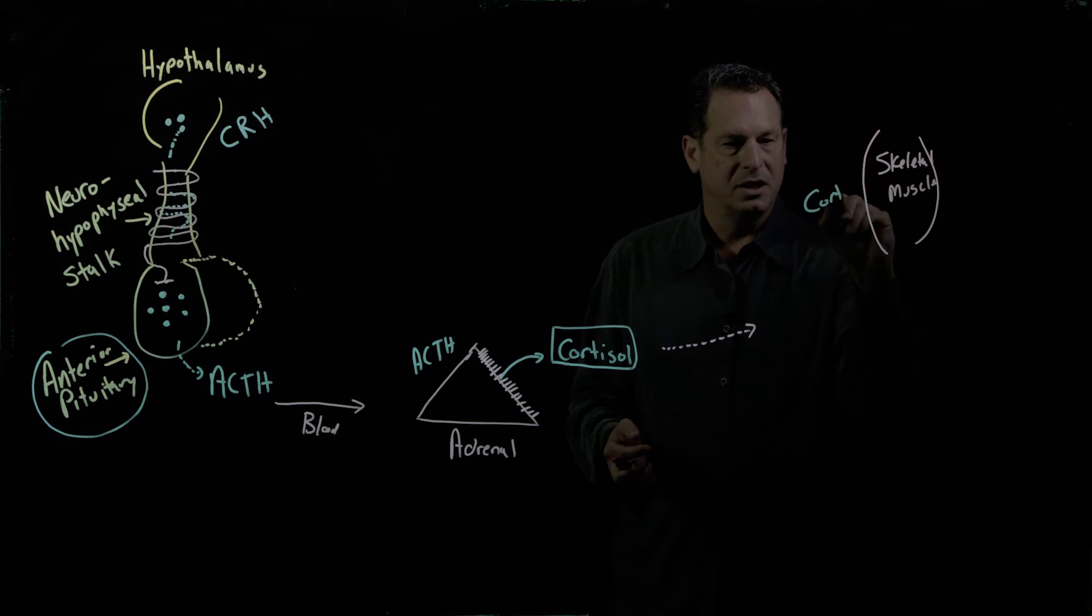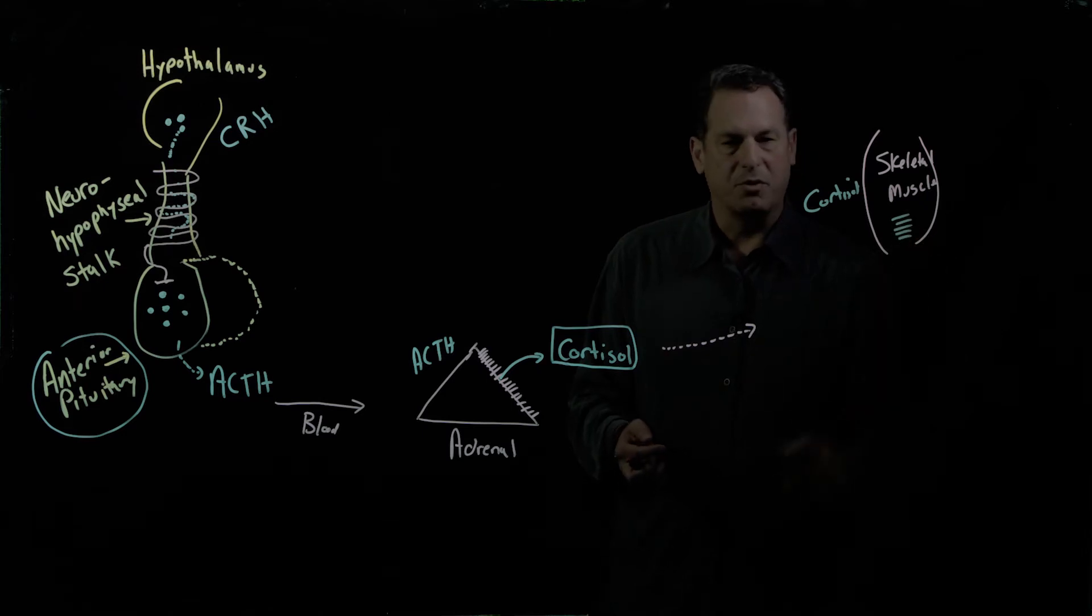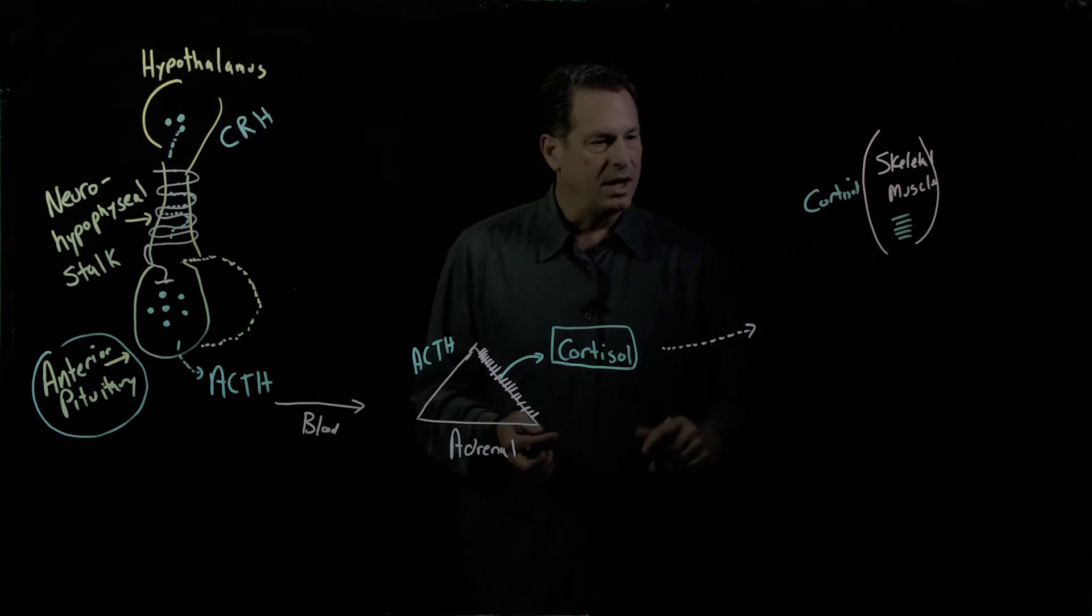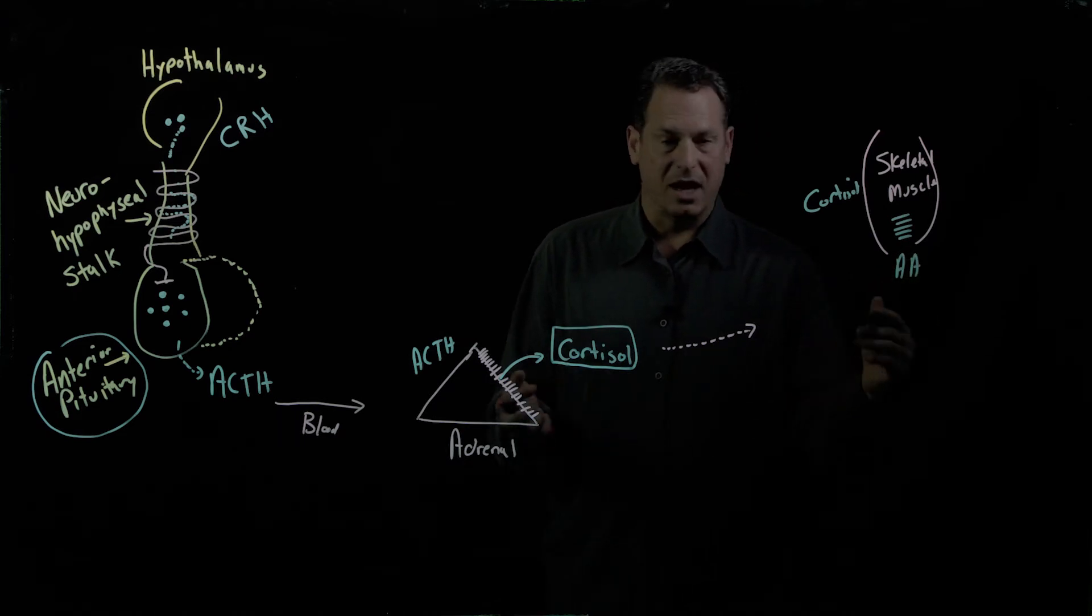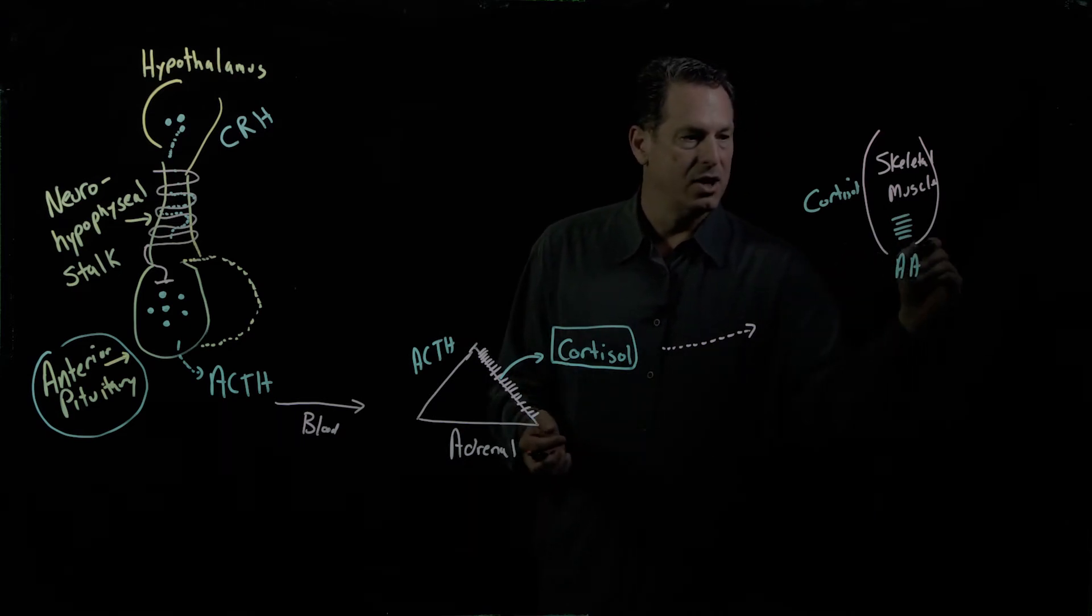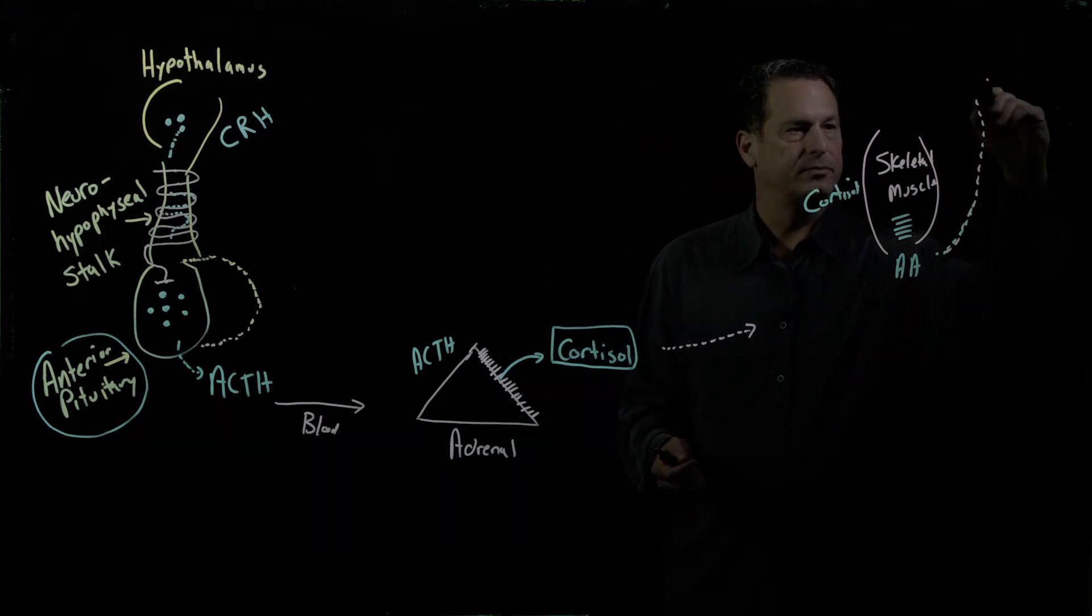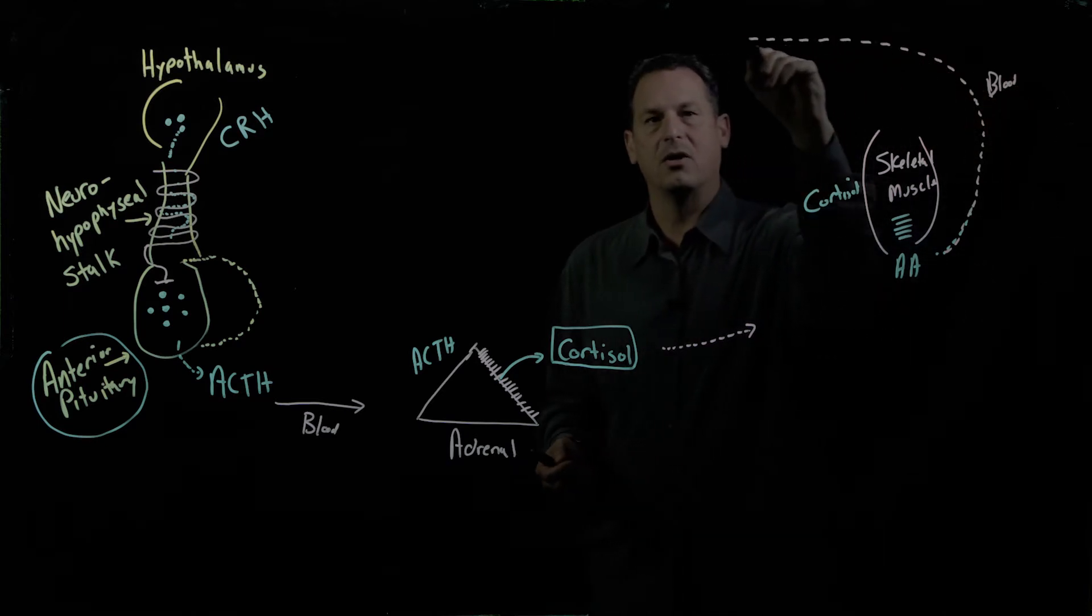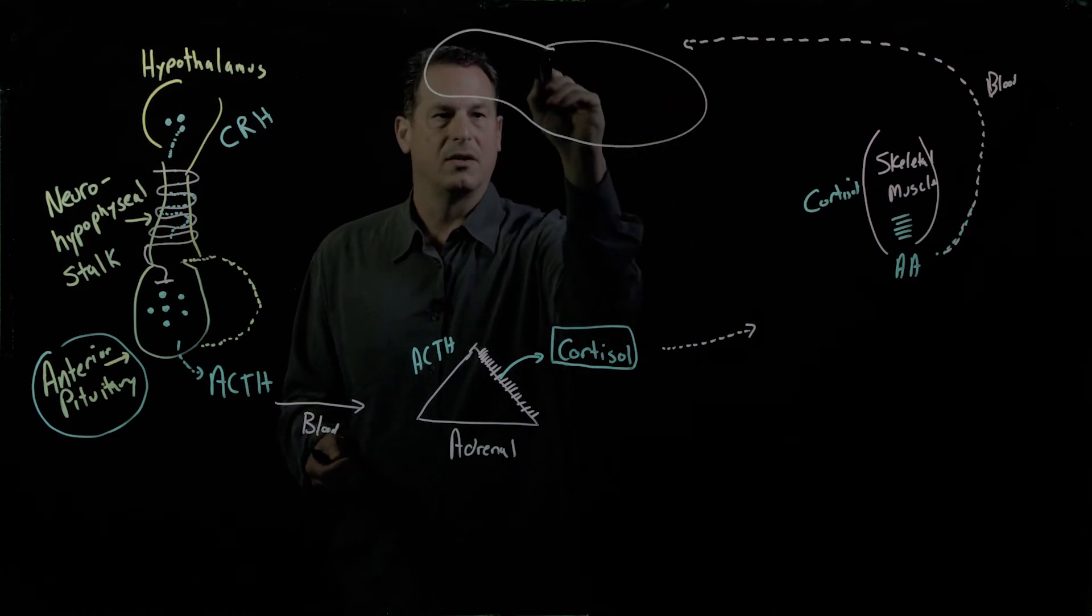cortisol causes skeletal muscle to start to break down its proteins. It liberates some of the amino acids from the skeletal muscle and those amino acids will enter into the bloodstream and they'll circulate all the way over to the liver.